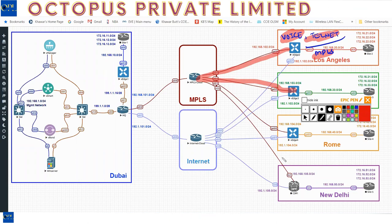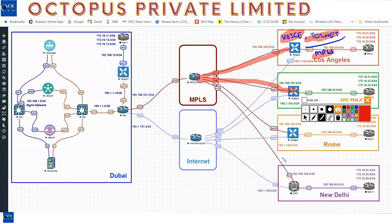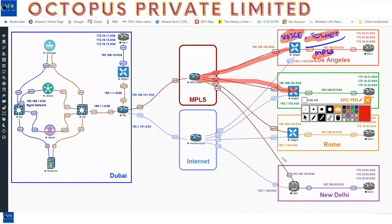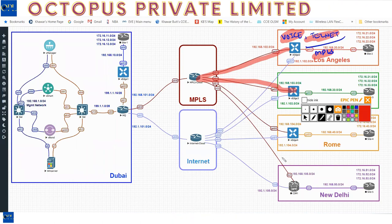OMP is specific to SD-WAN. For LA to reach Rome via MPLS, the MPLS cloud needs to have IP reachability to both sides — a default route will do the trick. You can use any type of transport as long as you have IP reachability. You can even do it without a public IP — that's where vBond helps.